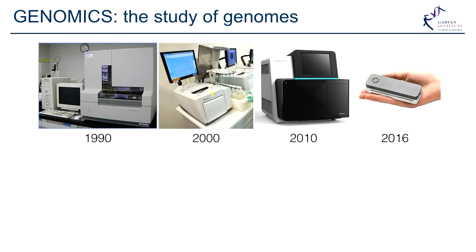This is the evolution of DNA sequencers. Genomics is highly predicated on the power to sequence DNA — to read the individual letters and stick them together and make sense of all that information. Thirty years ago we had really large, bulky machines that cost a fortune to run, but they ultimately led to the first draft of the human genome sequence. I think it cost billions of dollars and took about 11 years to complete. You'll notice every decade or so there's a pretty substantial leap forward in the technology and the output capacity of genetic information.